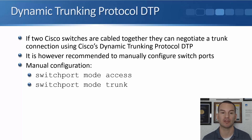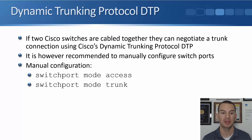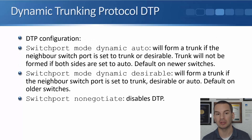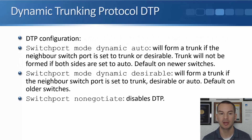So if you want to configure a port as an access port, you use 'switchport mode access'. If you want to configure it as a trunk port, you use 'switchport mode trunk'. But if you are going to use DTP, these are the available commands. The first one is 'switchport mode dynamic auto'.